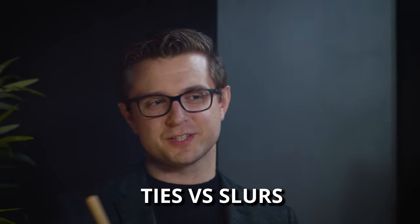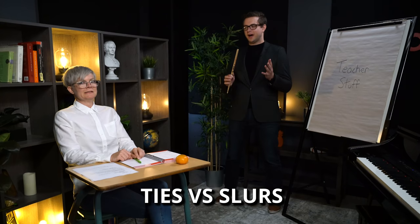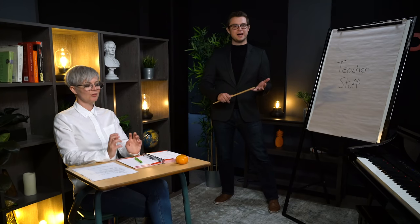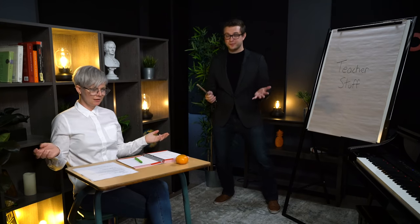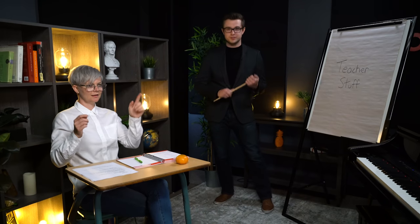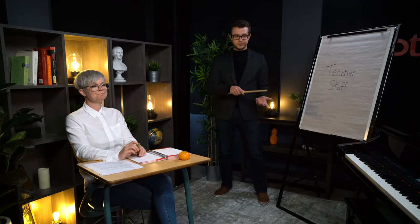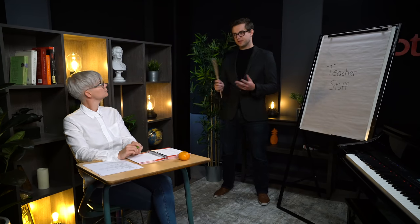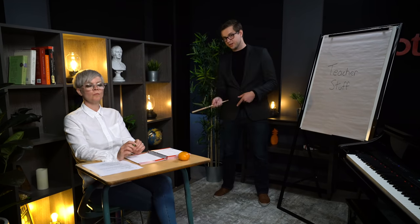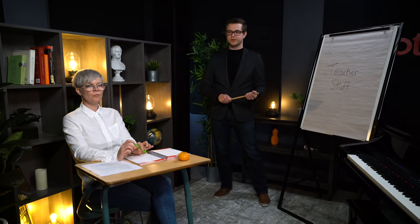All right. So our next subject of conversation is ties versus slurs. Now, I know they look the same. When you have a tie and a slur, it pretty much visually looks exactly identical, but they are used in different ways. If you're tying notes together, this means that you are holding notes through a barline. If you're slurring notes, that means you're making a group of notes smooth. I'm going to play something on the piano and I want you to hear the difference between the tie and the slur.